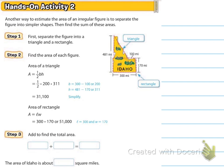Activity number two says another way to estimate the area of an irregular figure is to separate the figure into simpler shapes and find the sum of those areas. So you know formulas for triangle, trapezoid, rectangle, square, parallelogram, all those good things. We're going to take this picture of Idaho and let's separate it into a triangle and a rectangle. I think you could have also changed it to a trapezoid. We've got a lot of options.